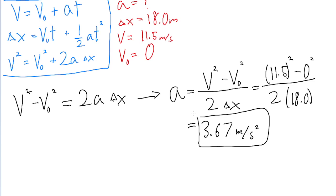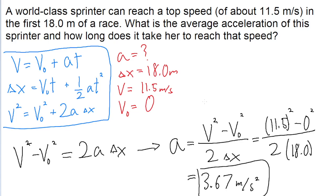So this answers the first part of the problem, which asks about the acceleration. But the problem also asks about how long it takes the sprinter to reach that speed. So now that we have the acceleration, now that that is one of our knowns, I'm even going to label it at the top here, where I've made note of the different variables we have.